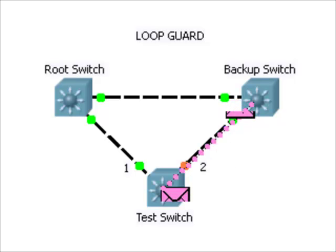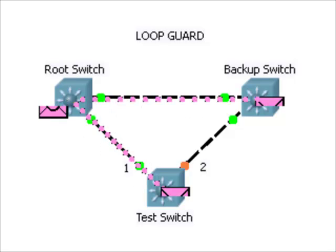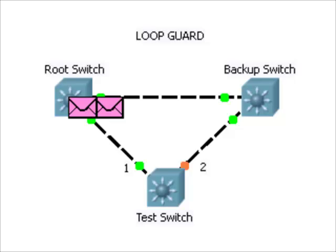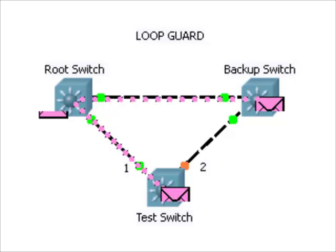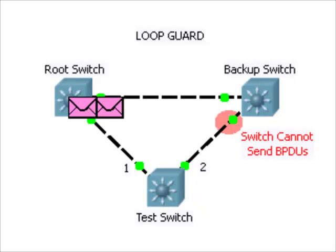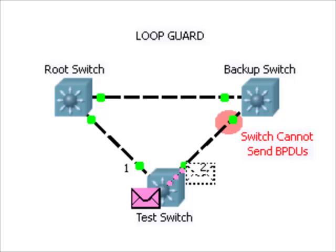The loop guard feature provides additional protection against layer 2 forwarding loops by performing additional checks. Normally, the root switch will send out BPDUs that traverse the local switching network. Spanning tree is blocking interface port number 2 on the test switch because it is receiving BPDUs with the backup switch's superior Bridge ID. The test switch knows it has been receiving BPDUs on interface number 2, so if BPDUs go missing on that port, loop guard assumes it is because of a unidirectional link issue and re-blocks it with the loop inconsistent state.